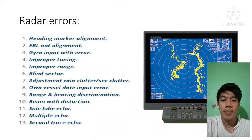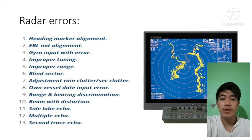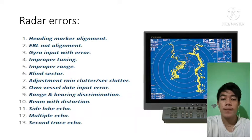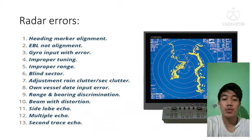First we have the heading marker alignment. In north-up orientation, the heading marker is aligned with the graduation and bearing scale that corresponds with the instantaneous value of the ship's heading relative to true north. It means that 000 degrees on the bearing scale aligns with the true north.